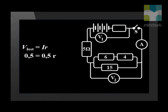We now use Ohm's law to calculate the internal resistance. Lost volts 0.5 equals current times internal resistance R. This gives us an internal resistance of 1 Ohm.